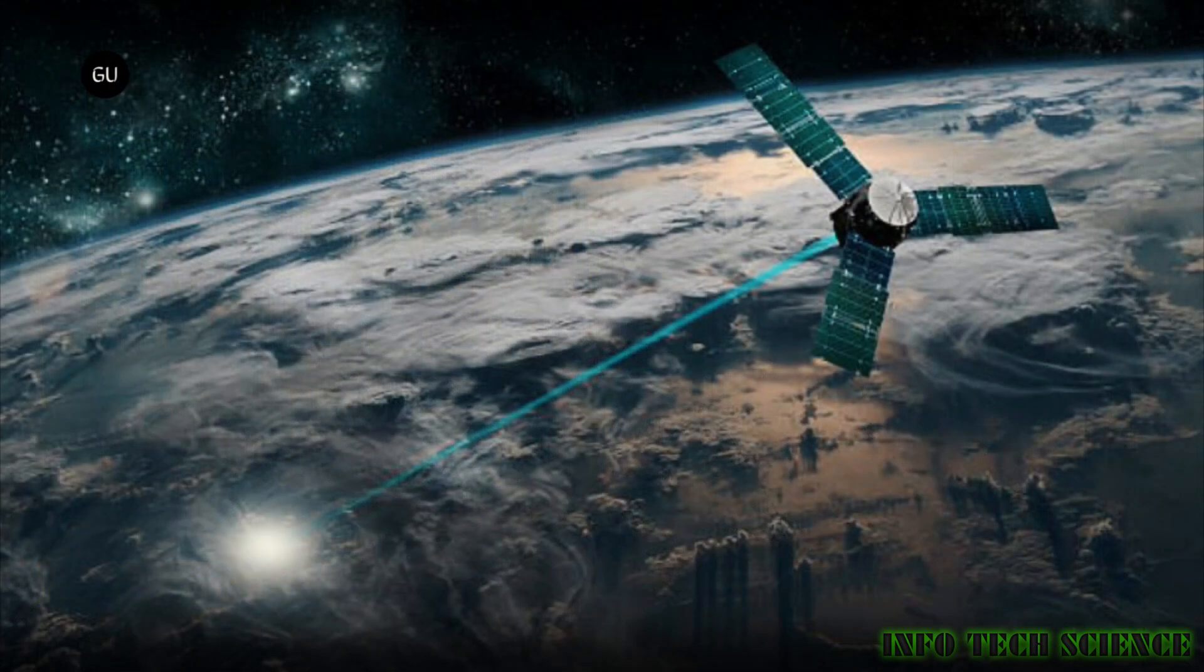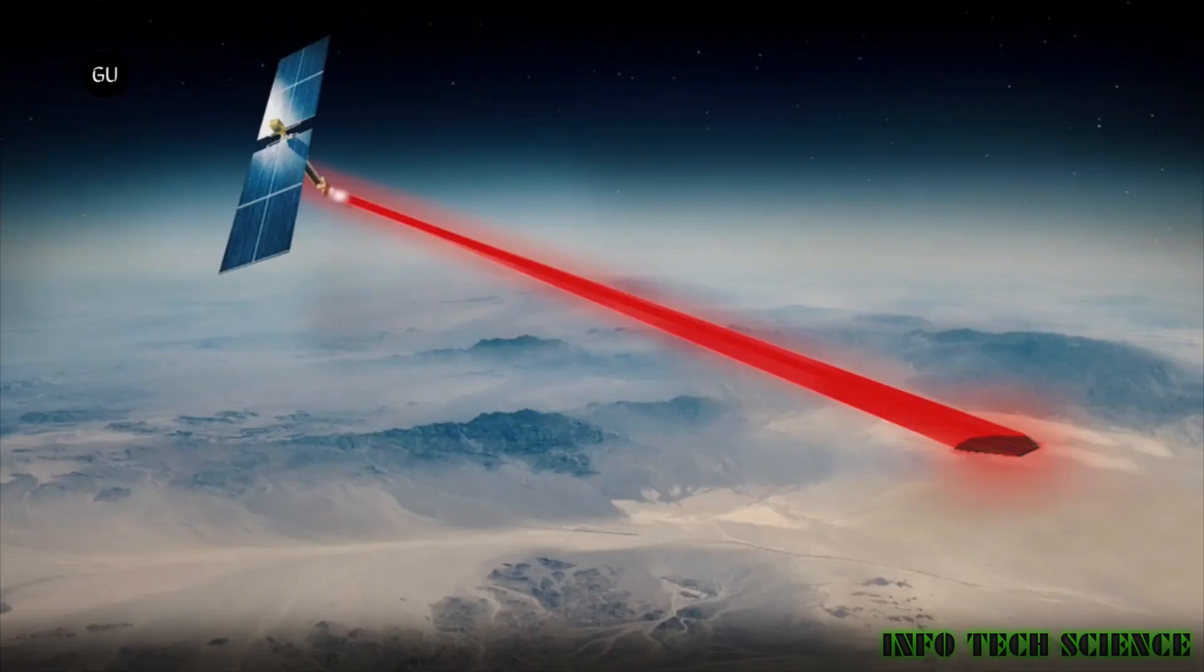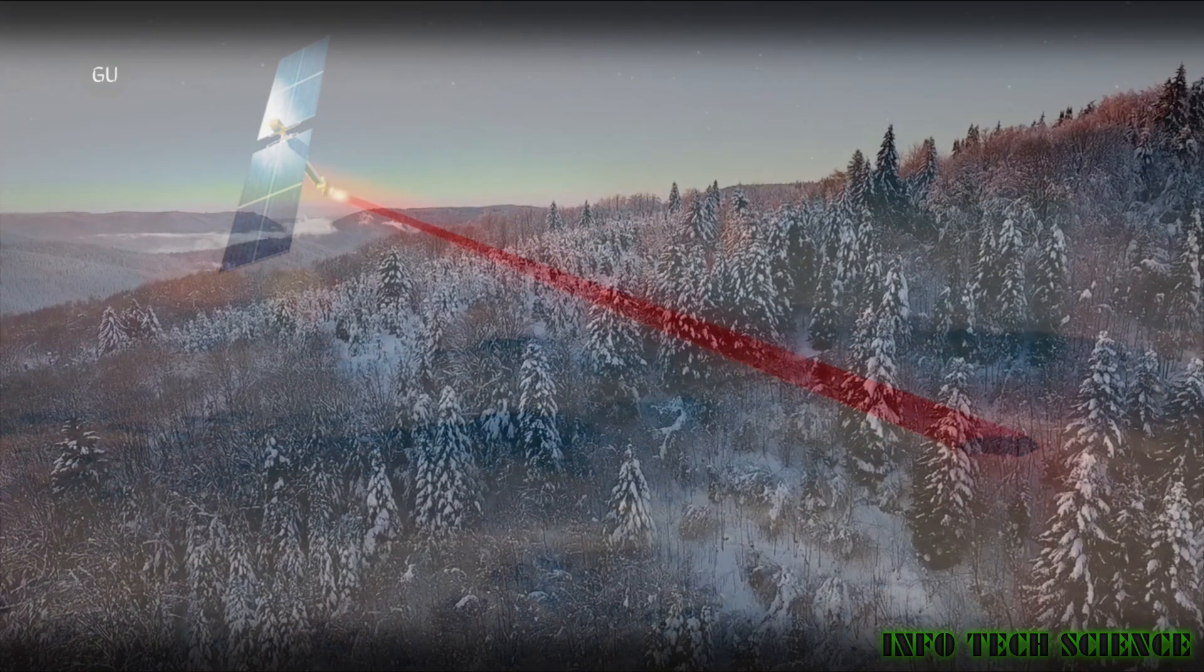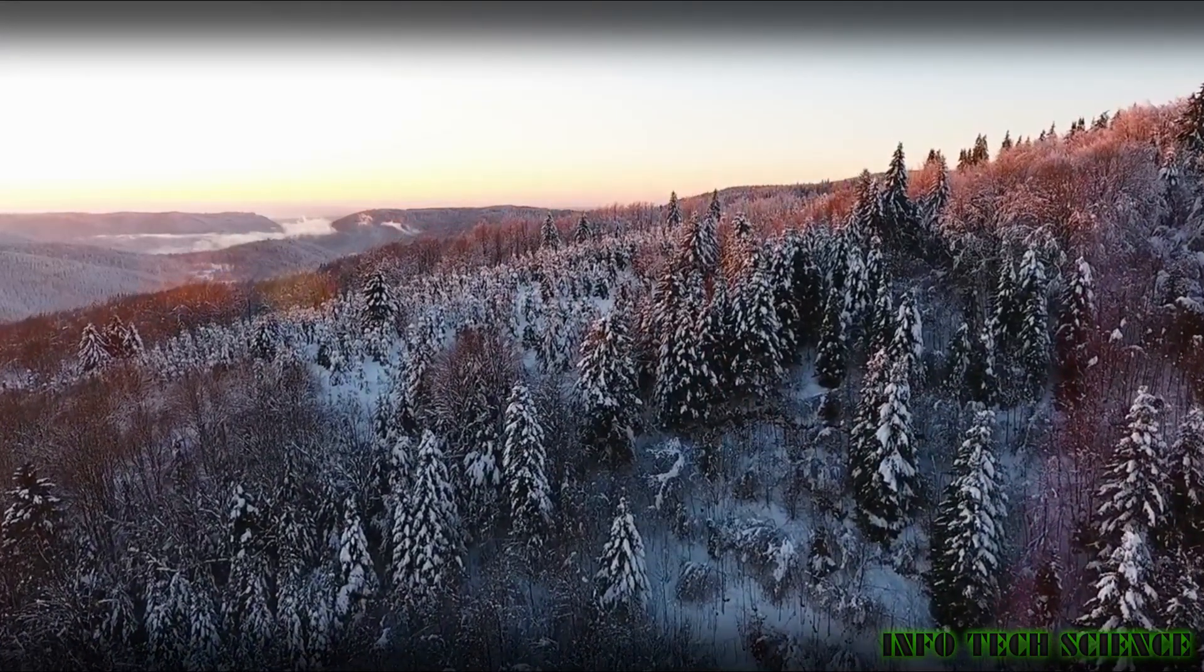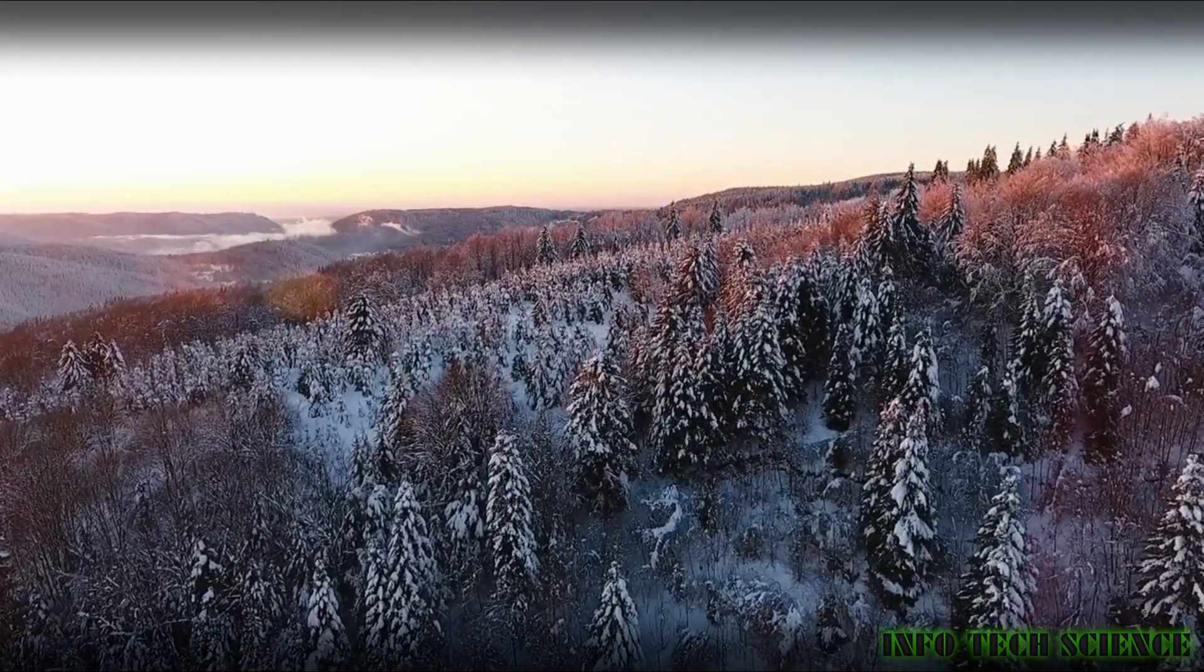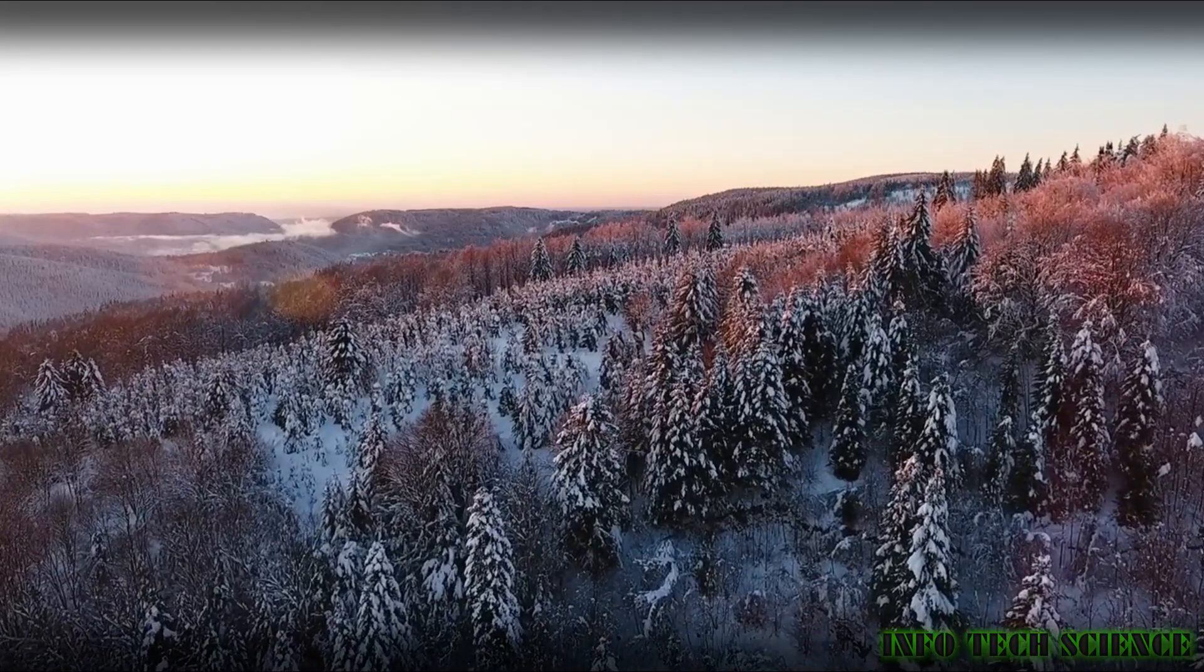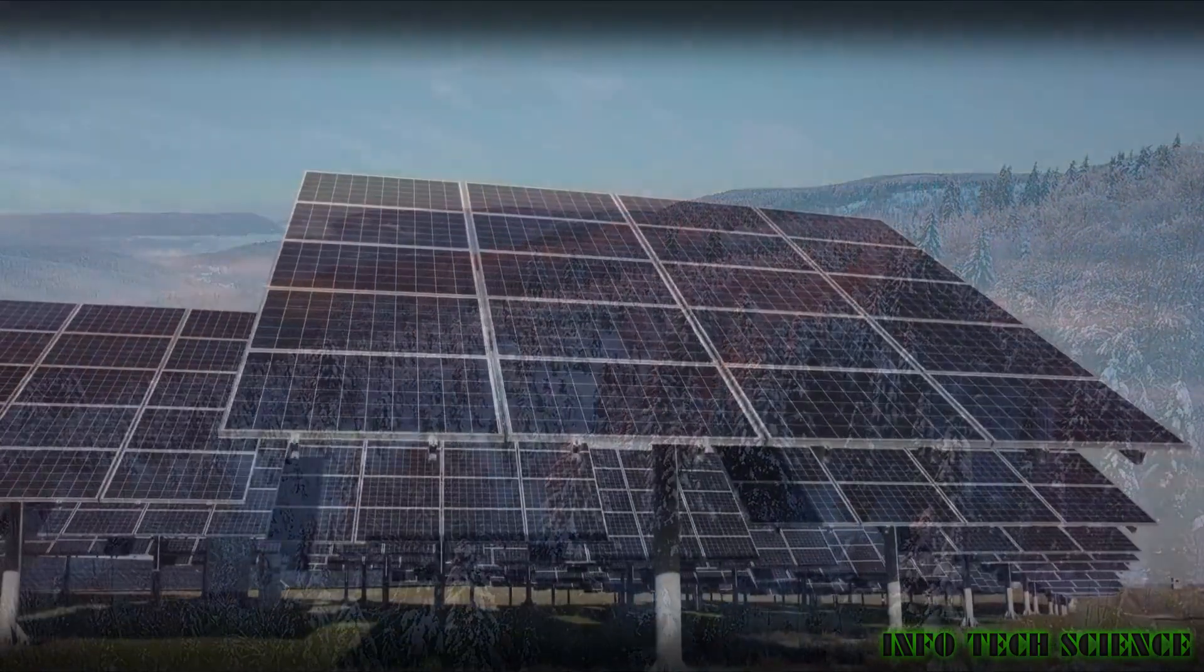The advantages of a space-based solar grid include continuous sunlight. In space, solar panels can receive sunlight almost continuously without being affected by atmospheric conditions or day-night cycles. This results in much higher and more consistent power output compared to solar panels on Earth's surface.